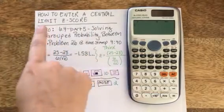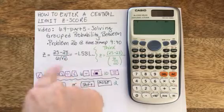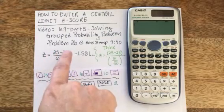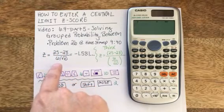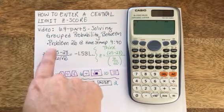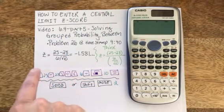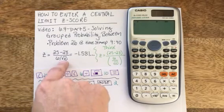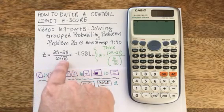Now I'm going to show you how to enter a central limit z-score, which is basically your standard z-score, data minus mean over standard deviation. But because it's a central limit theorem, it's actually instead of data, it's a group average, so we have to account our standard deviation for the group size.